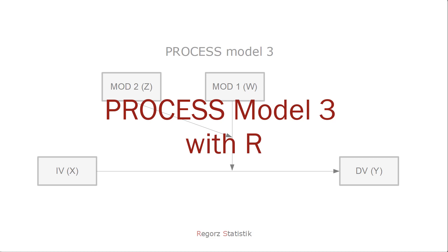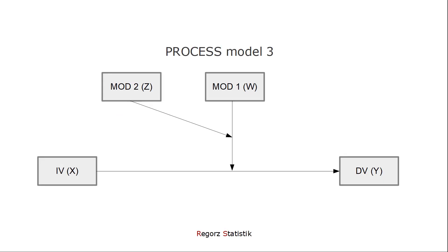Welcome to this video about process model number three with R, that is a moderated moderation analysis. I'm going to show you how you can use PROCESS for R to estimate a model with an independent variable, a dependent variable, and two moderators. Those two moderators interact so that the second moderator moderates the moderating influence of the first moderator.